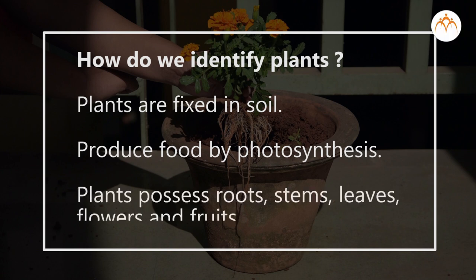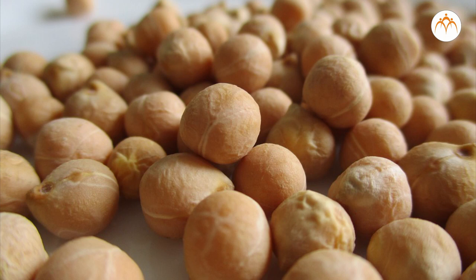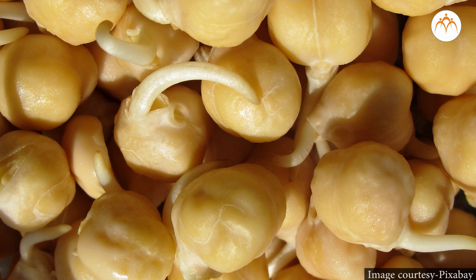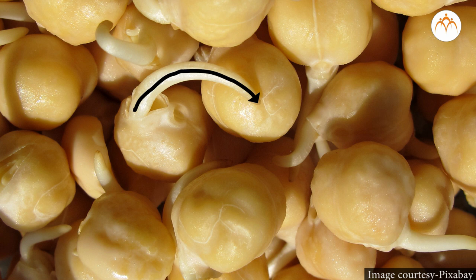Soak some pea or soybean seeds in water overnight, then allow them to grow on moist tissue paper. After one day, you will find that a small tiny projection comes out from the seed — this is the radicle. Allow the radicle to grow further and you will realize it grows downwards. This radicle forms the roots of the plant. When you place these seeds in soil, the radicle grows towards the soil and gives rise to roots. Remember, roots always grow towards soil where there is water.